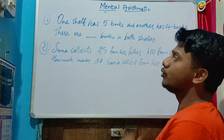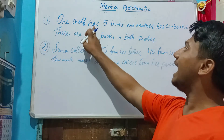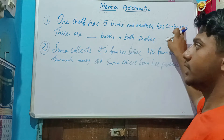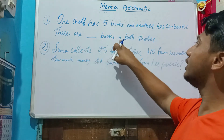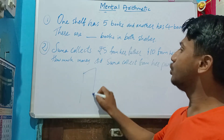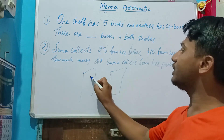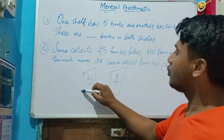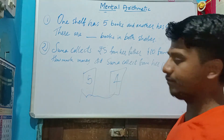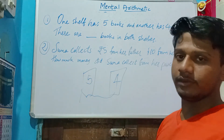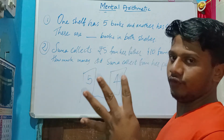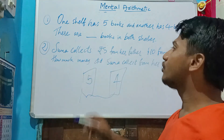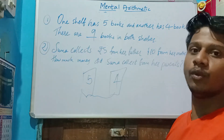Let's see these two problems. One shelf has five books and another has four books — how many books are there in both shelves? After five, count four more: six, seven, eight, nine. So there are totally nine books in both shelves.